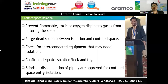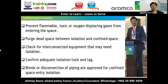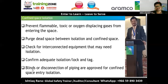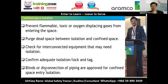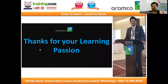For confined space isolation, the goal is to prevent flammable, toxic, and oxygen-displacing gases from entering the space. Follow the depth of space between isolation and confined spaces, check for interconnected equipment that may need isolation, understand the complete layout and drawings, and identify the best isolation points. Whether using blinds or disconnection, only blinding and disconnection are the approved safe methods. Confirm adequate isolation with lock and tag — and the final rule: blinding or disconnection of piping are the approved methods for confined space entry.